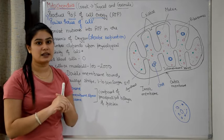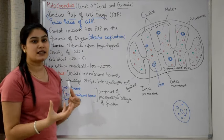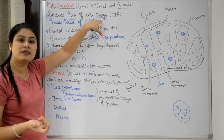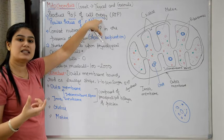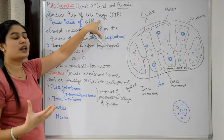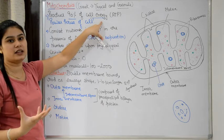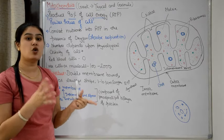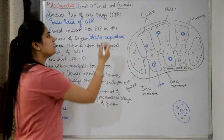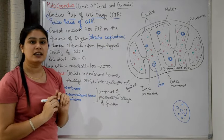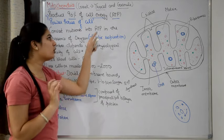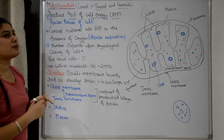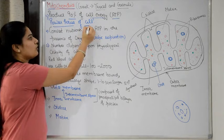Different cells perform different activities, and they all need energy. If this energy doesn't reach the cell, the cell will not grow and will die. So the important function of mitochondria is to give the cell energy — it produces energy in the form of ATP, which stands for adenosine triphosphate. That is why mitochondria is called the powerhouse of the cell.